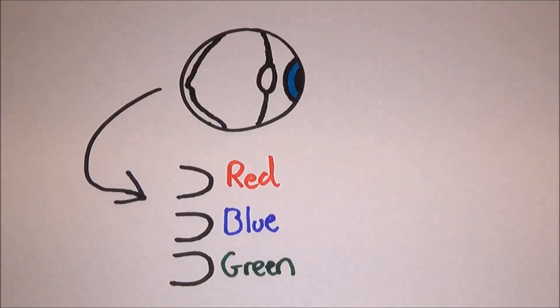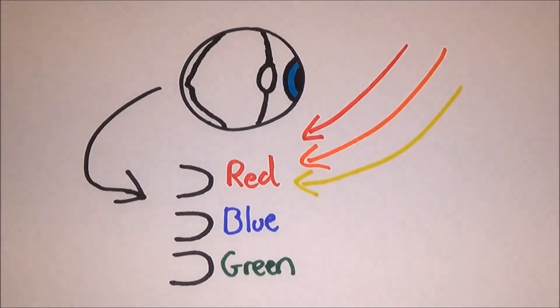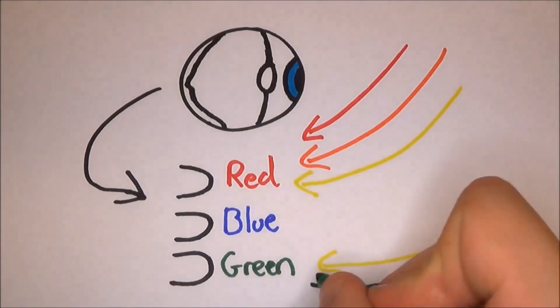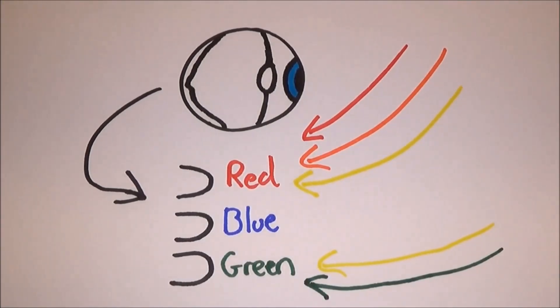So when you look up at the sky, your red cones respond to a small amount of scattered red light, but also a tiny bit of orange and yellow light too. The green cones respond to a bit of yellow, mainly green, but then also a little bit of greeny blue.